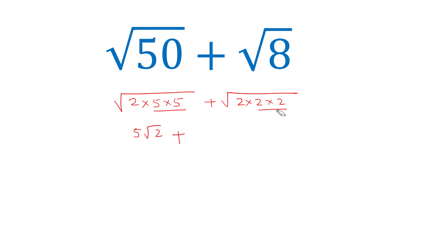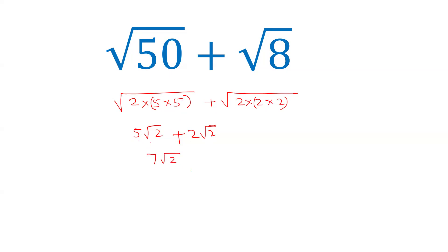Similarly, 2 into 2 is 4 and under root 4 is 2. Or simply, we make a pair of numbers — the order of the surd is 2, so we make pairs of two numbers and take one number outside the surd. Now these two numbers have like surds: root 2 and root 2. So this can be added as 5 plus 2, which gives 7 under root 2.